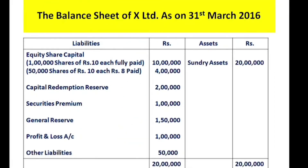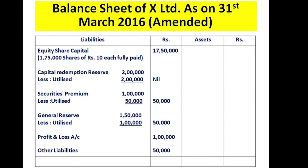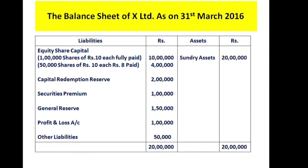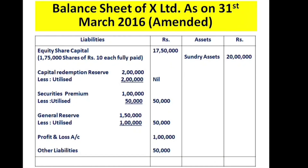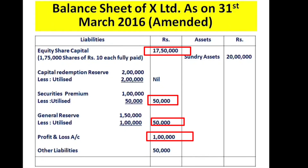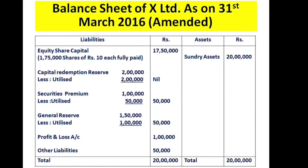Checking both sides of the balance sheet: liabilities side totals — 18 lakhs + 15,000 = 18,15,000 + 1 lakh = 19,15,000 + 50,000 = 19,65,000 + 1 lakh = 20 lakhs. Assets side also totals ₹20 lakhs. Both sides tally at ₹20 lakhs, confirming the balance sheet is correct.